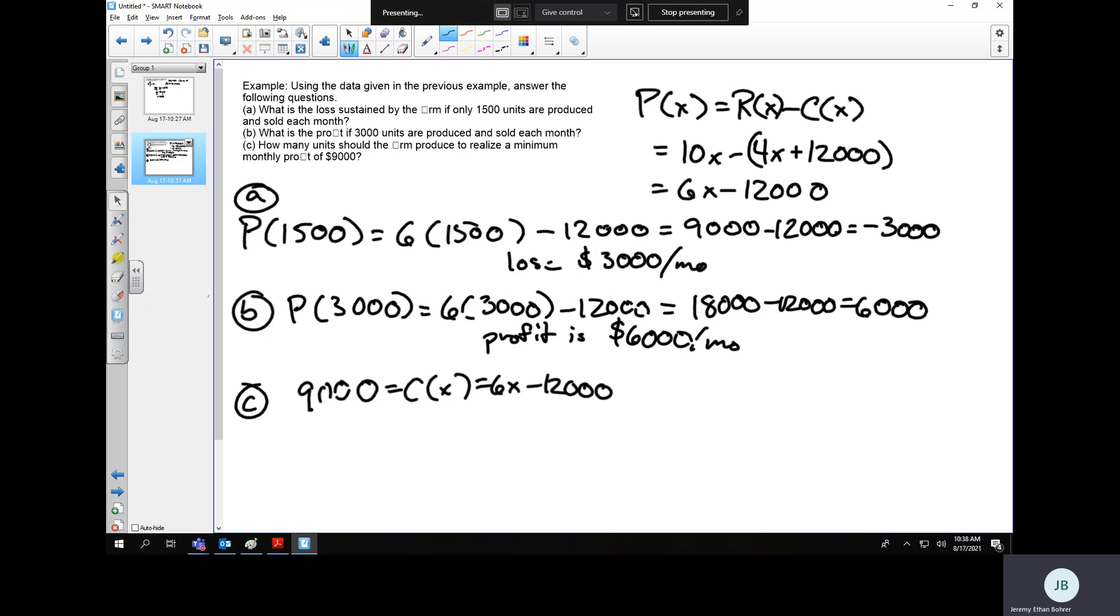So if I add 12,000 to both sides of this, that gives us 21,000 equals 6X. So I divide both sides by 6.